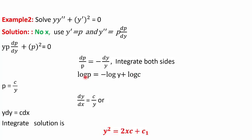Taking the exponential, we get p = c/y. Since p = dy/dx, we get dy/dx = c/y. Separating variables and integrating, we get the solution y² = 2cx + c₁. Again, we have solved two first-order differential equations: dp/p = −dy/y, and dy/dx = c/y.